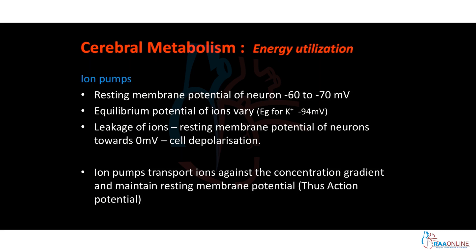Coming to energy utilization: the resting membrane potential of a neuron is around minus 60 to minus 70 millivolts, and the equilibration potential of ions varies. For example, for potassium it is around minus 94 millivolts. Because of the difference between these two potentials, continuous leakage of ions will occur until the resting membrane potential becomes zero. Zero potential means cell depolarization and the loss of neuronal function. There are specialized pumps in the neuronal cell membrane that transport ions against the concentration and electrical gradient so that the resting membrane potential is maintained.